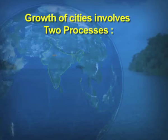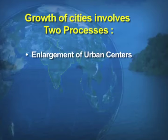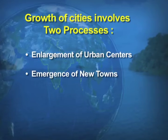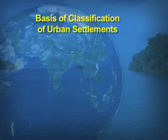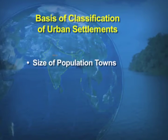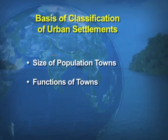Growth of cities involves two processes. One is the enlargement of the urban centers, and number two, the emergence of new towns. Now we talk about the different bases of classification of the urban settlements. There are two bases: one, the size of urban towns, and number two, the functions of the towns.